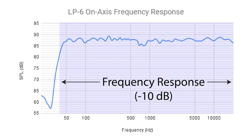The minus 10, which we call frequency response, basically tells you what the usable limit of the loudspeaker is. This is useful because it tells you if you're going to be able to actually hear the sound that the speaker is making at that frequency. So the LP6, as an example, has a minus 10 figure of 39 Hz.